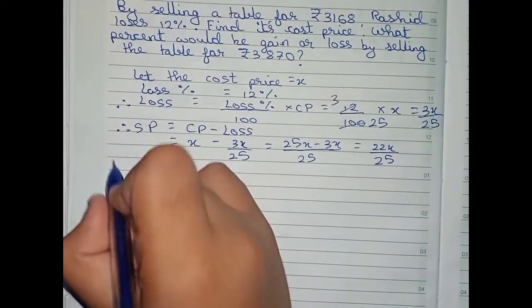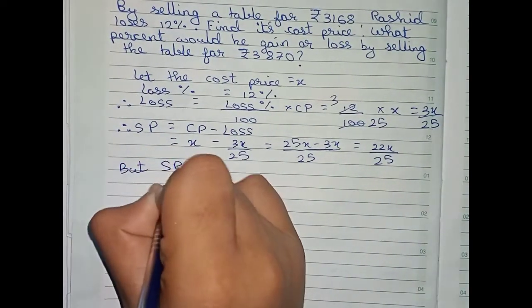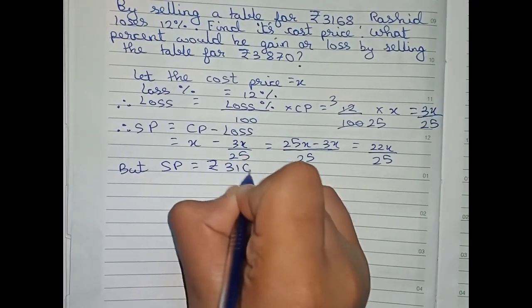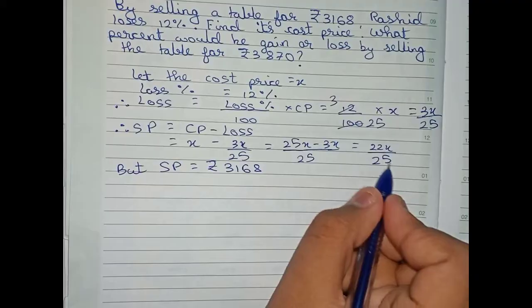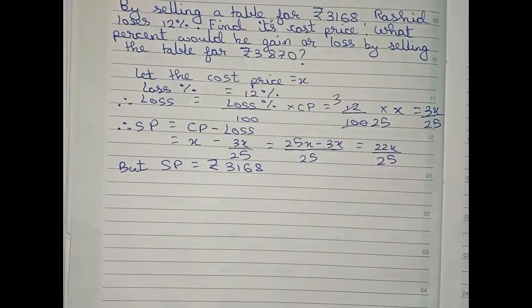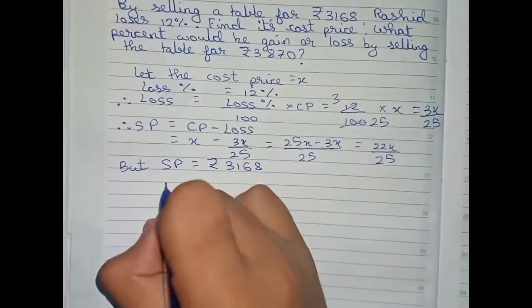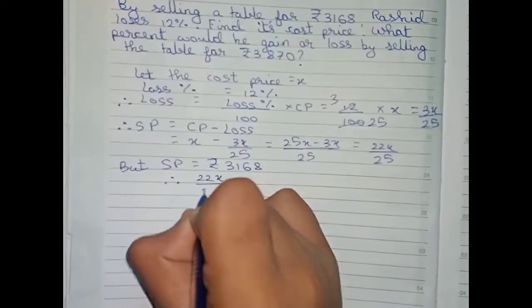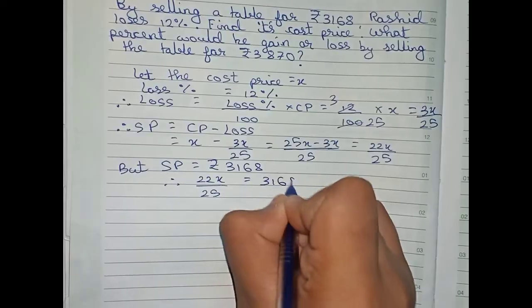Now, the given SP equals rupees 3168. Therefore we set 22x by 25 equal to 3168.